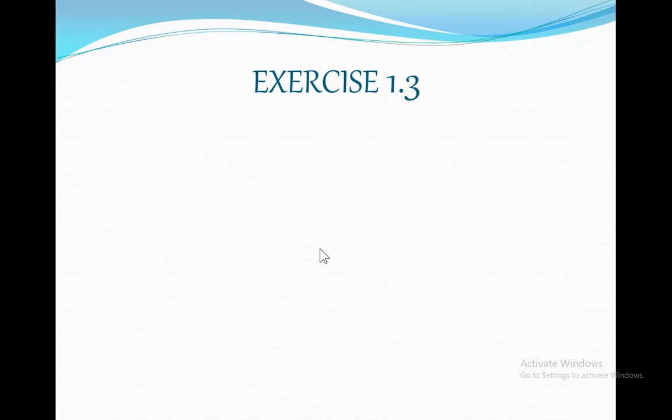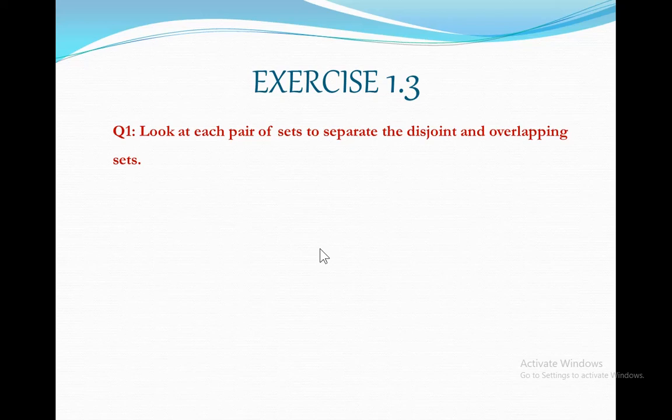Next we have one question from exercise 1.3. This is question number 1. The statement says look at each pair of sets to separate the disjoint and overlapping sets. We have first part number 2: Set L contains elements 2, 4, 6, 8, 10. Set M has elements 3, 6, 9, 12.